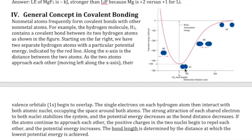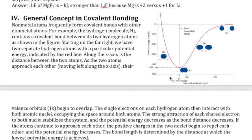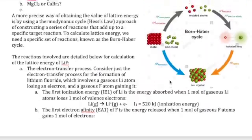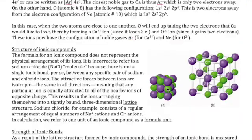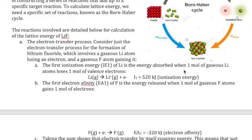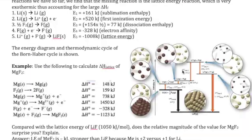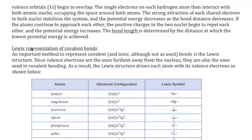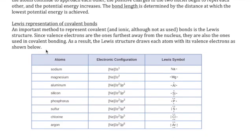So covalent bond formation is about the attraction of the nucleus of one atom with the valence electrons of the other atom. This is different from the attraction in an ionic bond, where you have cations and anions attracting each other. But the basis of that interaction is the same: electrostatic attraction.